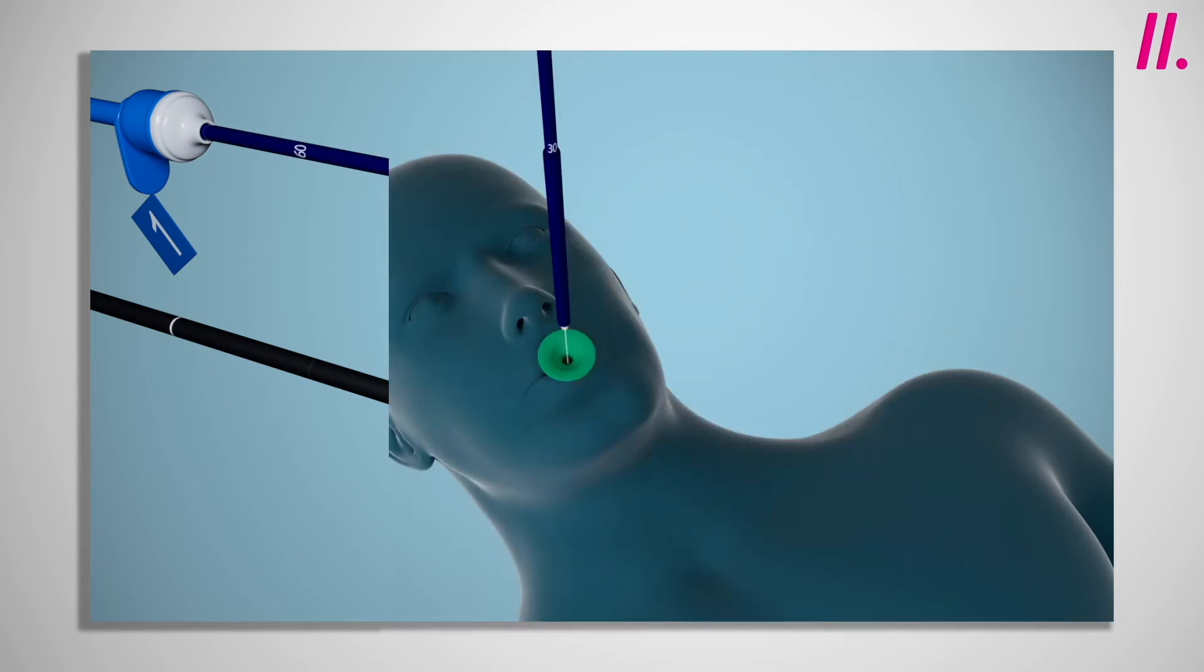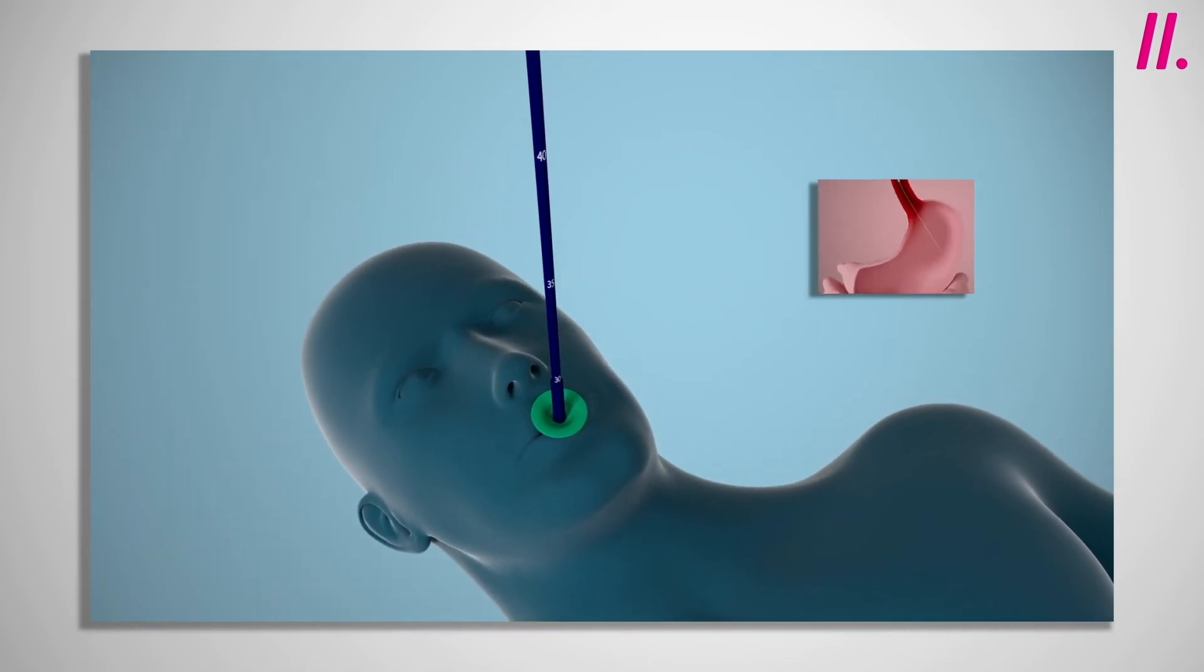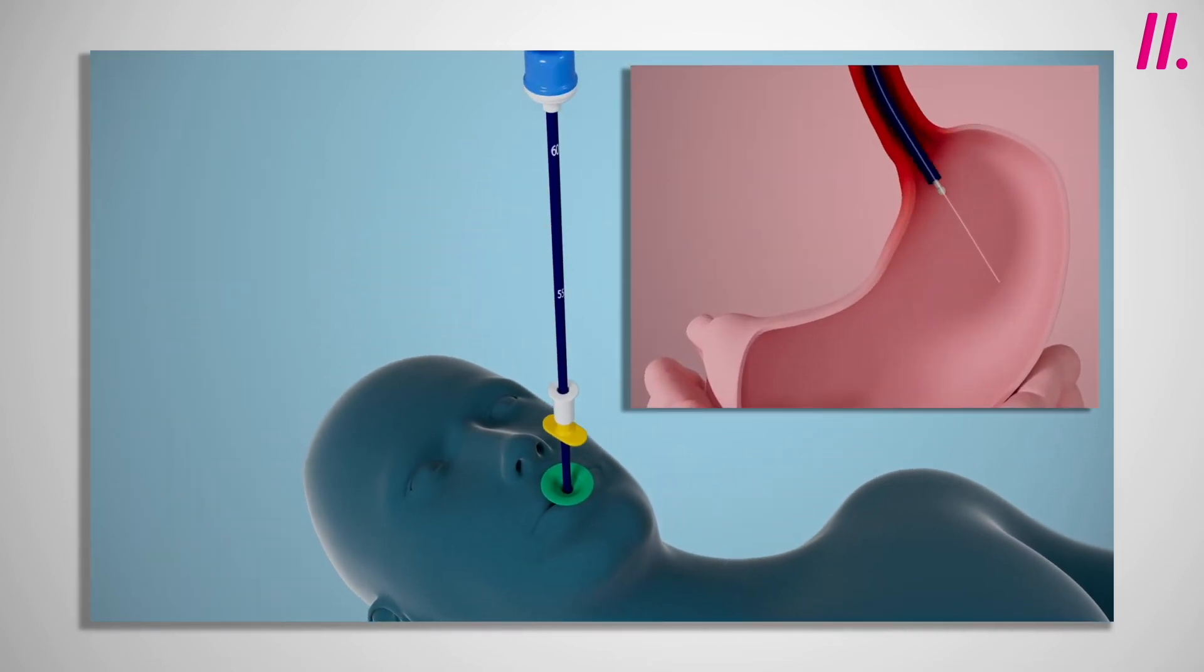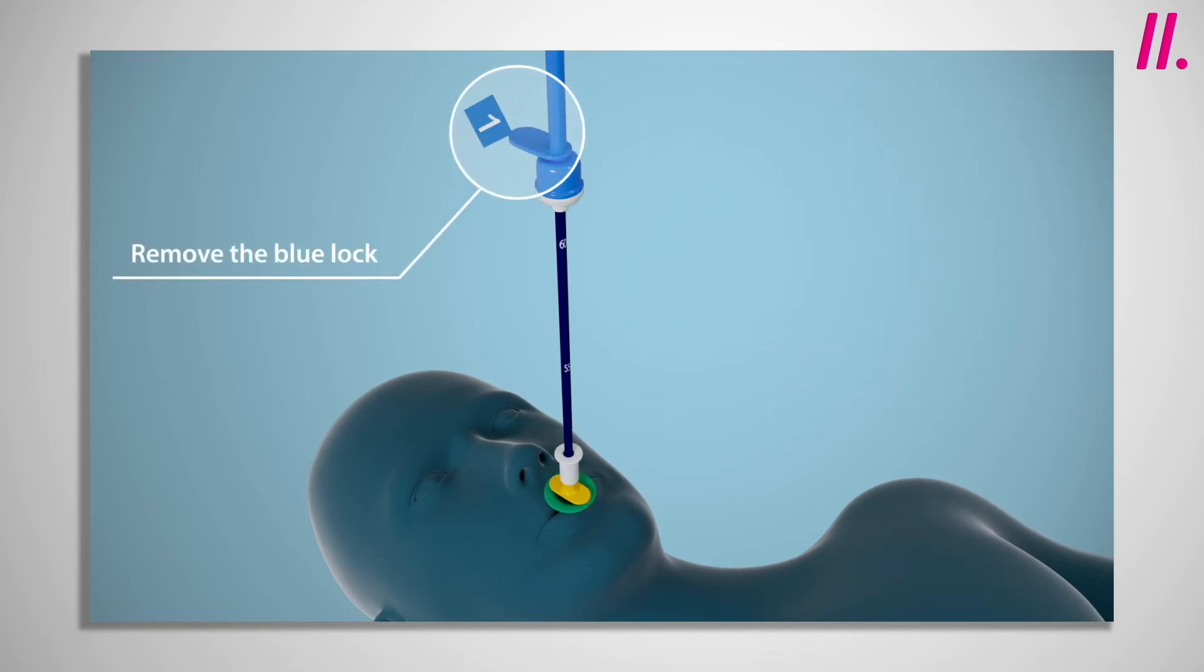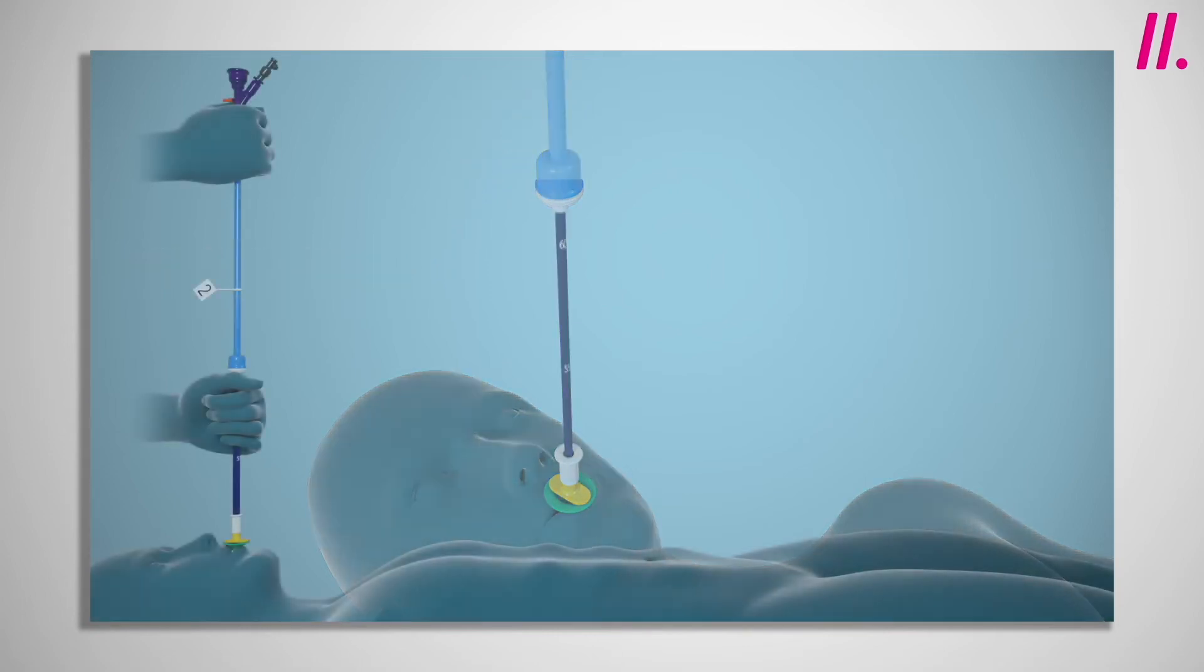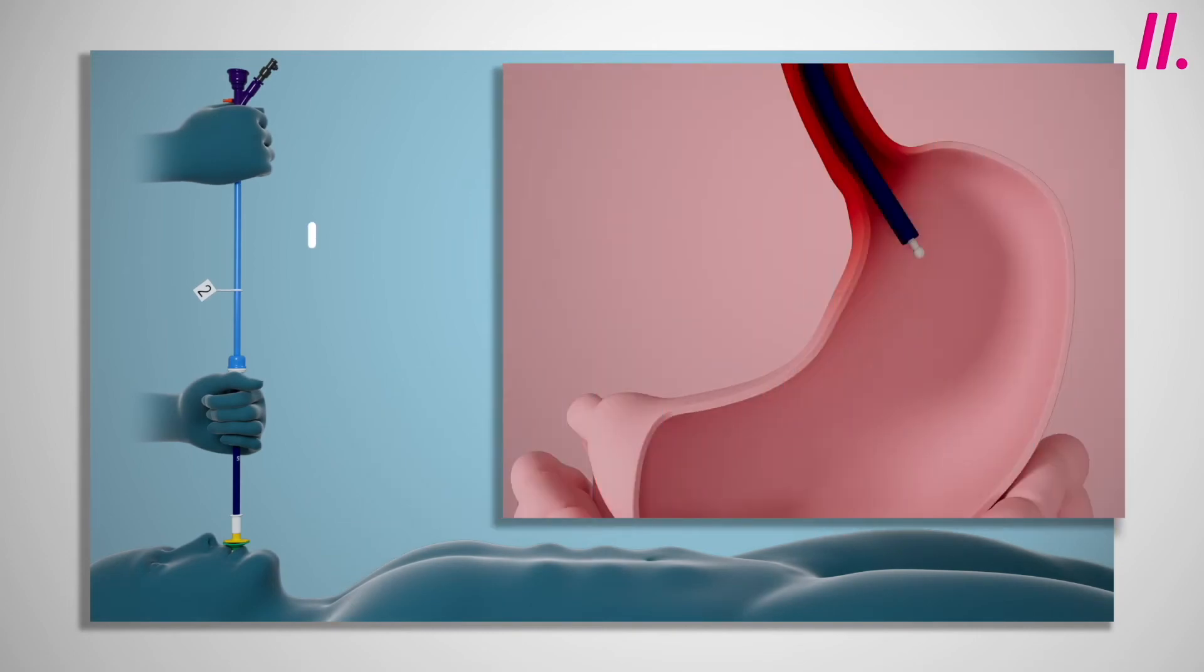The system is then advanced over the wire until the yellow plate meets the mouthpiece. The blue lock, numbered 1, is then removed and whilst fixing the blue sheath in position, the delivery system is advanced until the white lock, numbered 2, meets the blue sheath handle. This pushes the olive, balloon, and distal end of the stent out of the end of the delivery sheath.